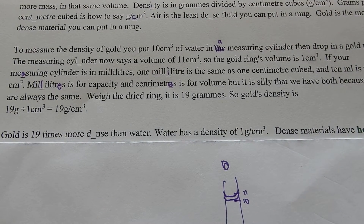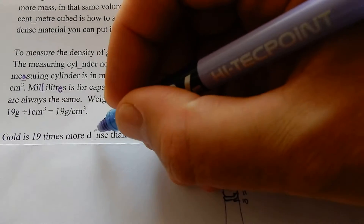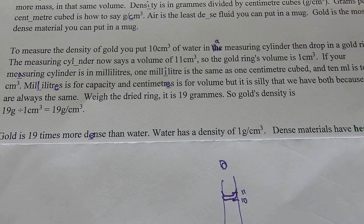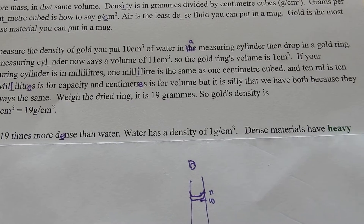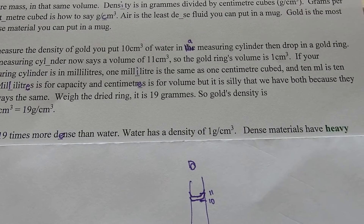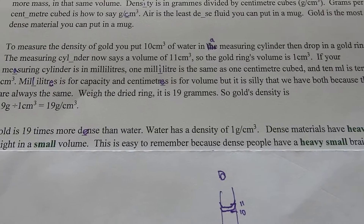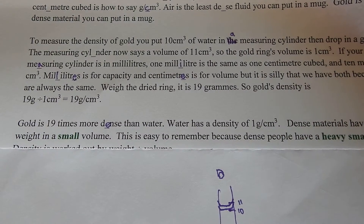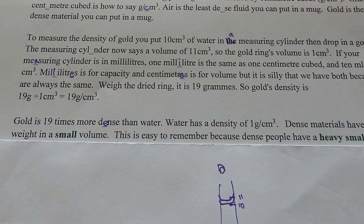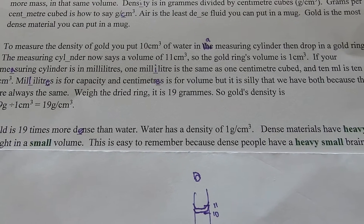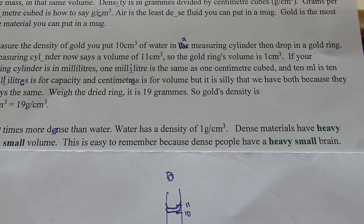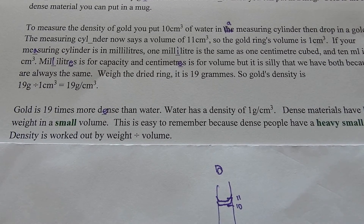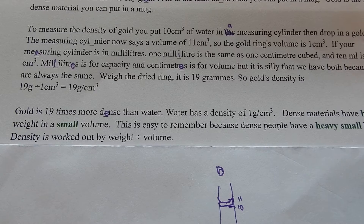Gold is 19 times more dense than water. The density of water is 1 gram per centimeter cubed — that's how grams were designed, to make it easy. Dense materials have heavy weight in a small volume. This is easy to remember because dense people have a heavy, small-volume brain. Density is worked out by weight divided by volume.